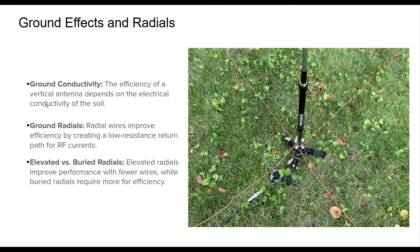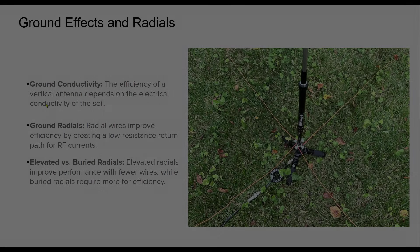Ground effects significantly impact vertical antenna performance. Soil conductivity influences how efficiently antennas radiate signals, with highly conductive ground improving efficiency. Ground radials — radial wires extending from the antenna base — provide a low resistance return path for RF currents, reducing energy loss. Elevated radials can perform well with fewer wires, while buried radials require a larger number to achieve similar efficiency. Proper grounding and radial installation are important for maximizing antenna effectiveness.